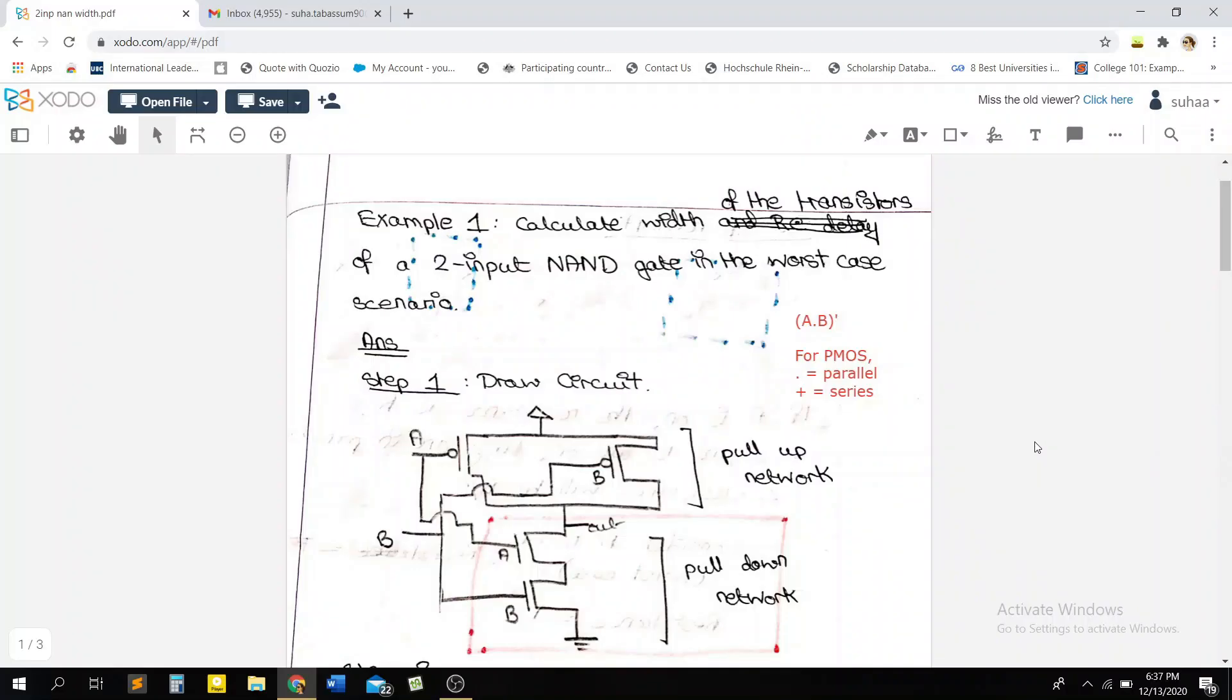So guys, welcome back. In the first video of the delay playlist, you'll remember that we discussed two steps on how to calculate the total RC delay of a circuit. Step one was calculating the width of the transistors, and that's what we're going to be learning in this video. In the example, you can see that the question is: calculate the width of the transistors of a two-input NAND gate in the worst case scenario.